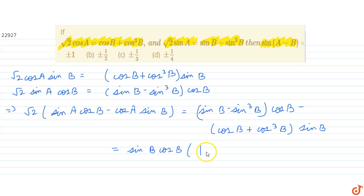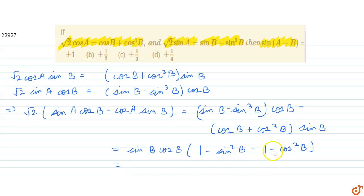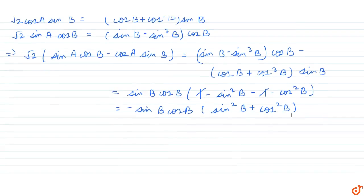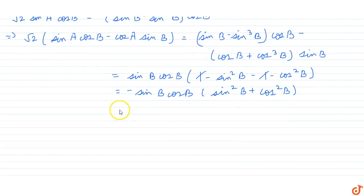What we get is (1 − sin²b) minus (1 − cos²b). Now taking out the minus sign, the 1 and −1 cancel. So we get −sin b·cos b multiplied by (sin²b + cos²b). Since sin²b + cos²b = 1, we get minus sin b·cos b.